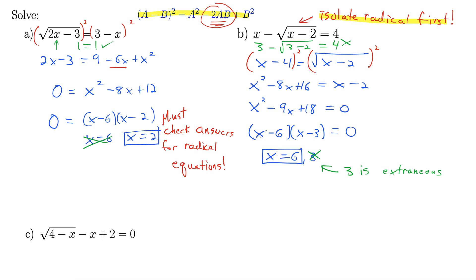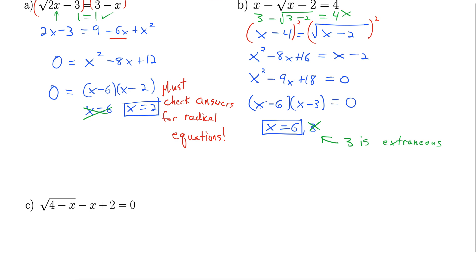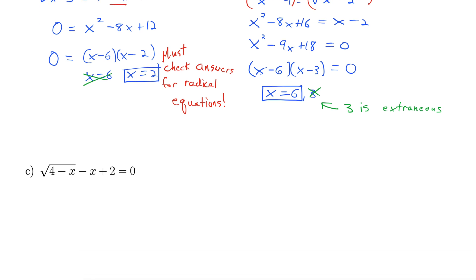Let's try c. For c, we have rad 4 minus x minus x plus 2 equals 0. Alright, step 1, always get the square root isolated on one side of the equal sign. So here I'm going to add an x and subtract a 2 from the right-hand side. That gives us rad 4 minus x equals x minus 2.